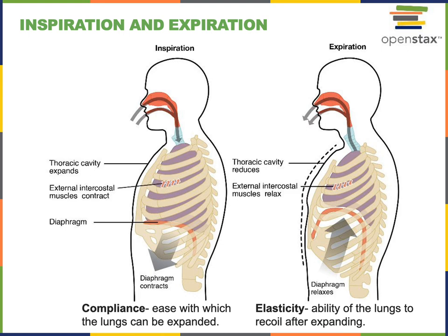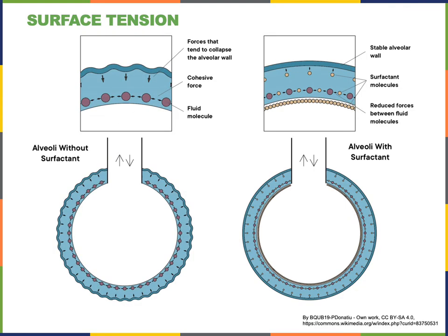The lungs have both compliance and elasticity. Ideally they stretch to a large maximal volume — the vital capacity — when breathing in with the full inspiratory reserve volume, and then elasticity helps force air out rapidly during expiration. Surface tension from water molecules on the alveolar surface creates a force that stimulates the alveoli to collapse. To counteract this, alveolar epithelial cells produce surfactant, which reduces surface tension and prevents the alveolar walls from collapsing.